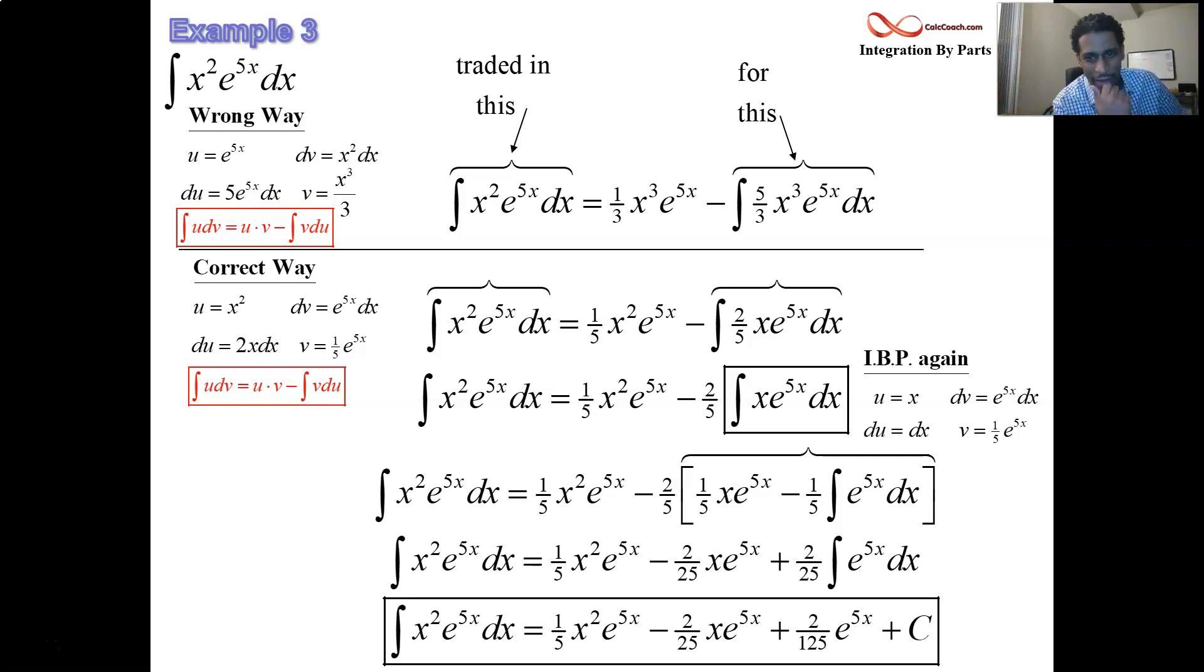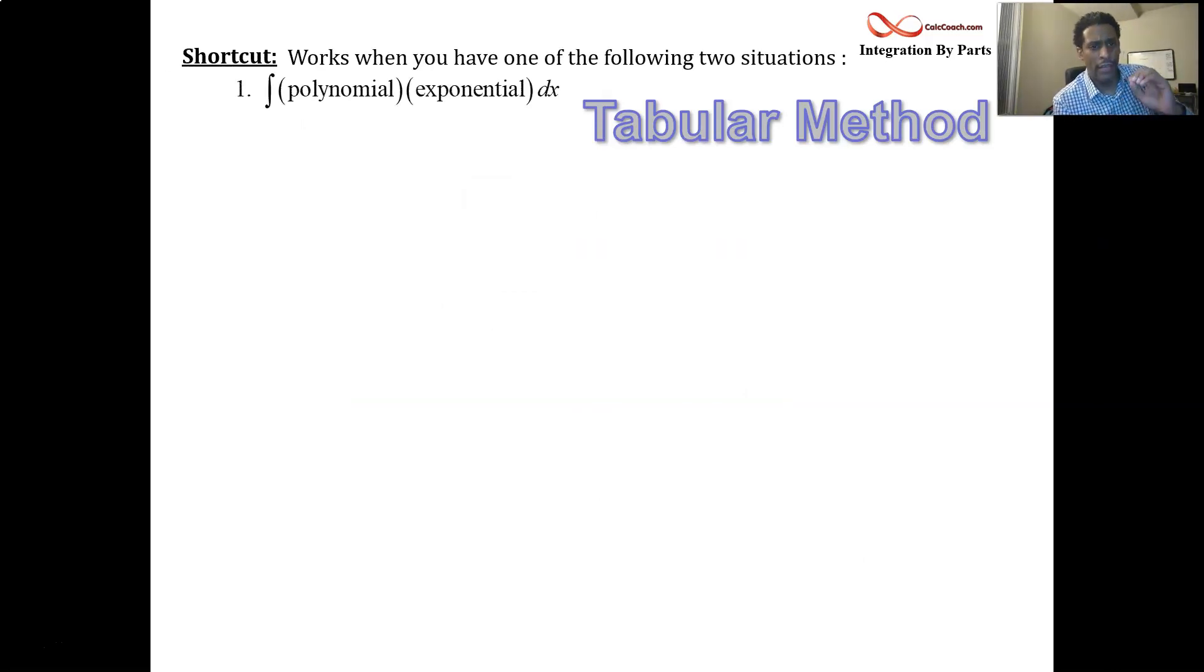It shouldn't take that long. There's a shortcut. The shortcut is called the tabular method. And here's, you've got to know when you can do it, a polynomial times an exponential or a polynomial times a trig, a trig that you can easily find the antiderivative of. So that same integral that we just did, we're going to do it in no time flat.